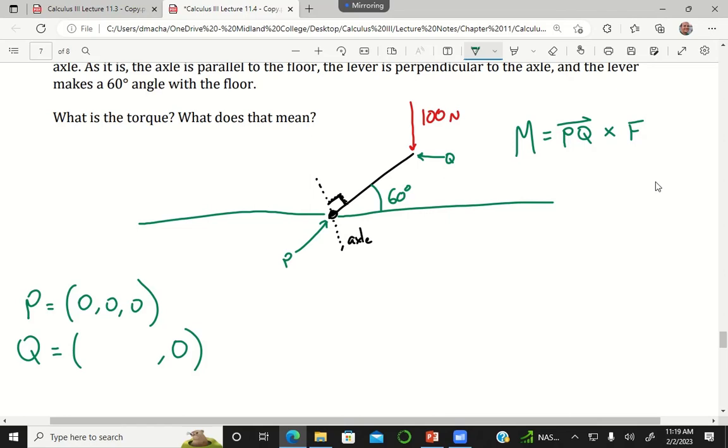For the x coordinate, let's call this the x axis right here. How do I find the x coordinate of point Q?